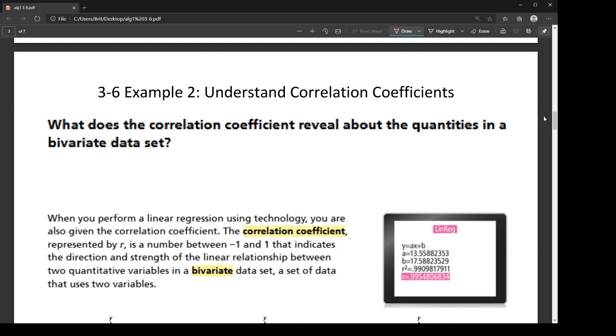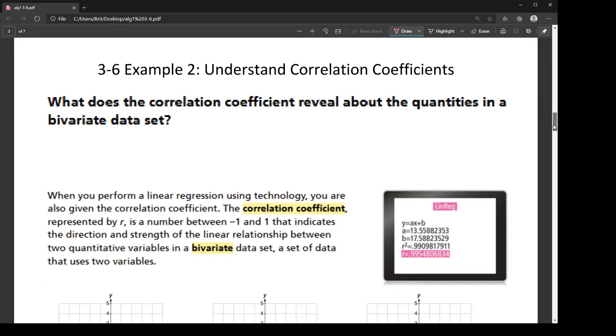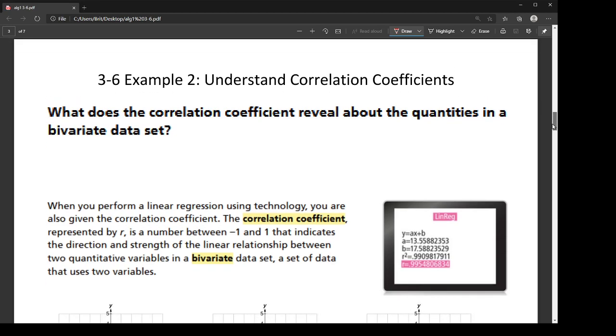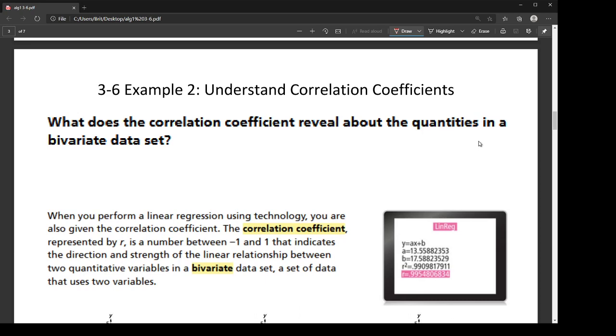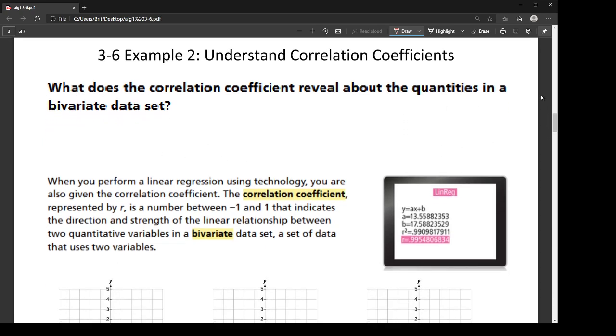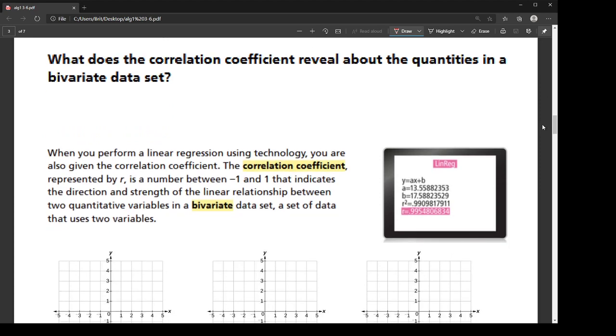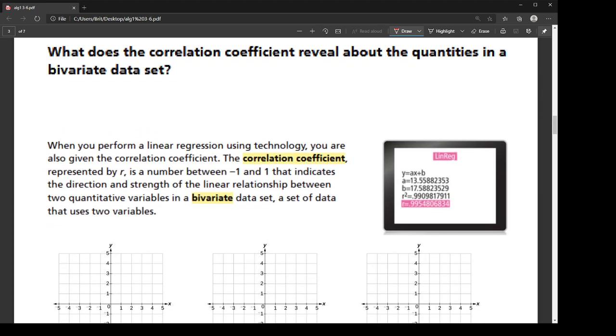Alright, so first, the question asks: what does the correlation coefficient reveal about the quantities in a bivariate data set? They're getting a little wild with the vocabulary, so let's talk about those.